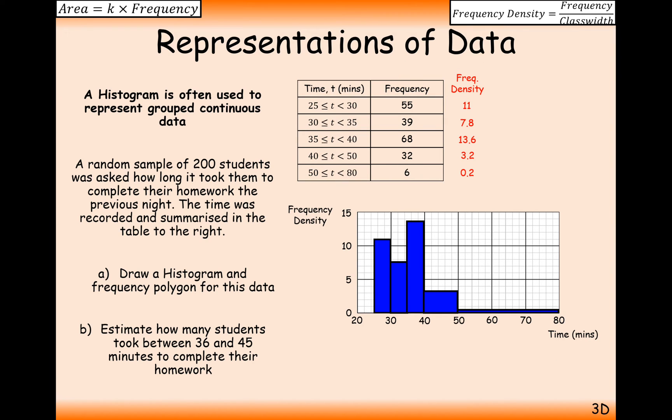So now what they're looking for us to do is to split up the areas of these bars and look at how many people did their homework in between 36 to 45 minutes. Now, what we know here is that there are 68 people that did their homework in between 35 to 40 minutes. Oh, we've still got to plot the frequency polygon.